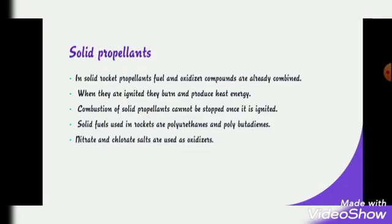The solid fuels used in rockets are polyurethanes and polybutadienes. Nitrate and chloride salts are used as oxidizers. These fuels and oxidizers are already in the combined state, and when ignited they start burning and produce heat energy and cannot be stopped.